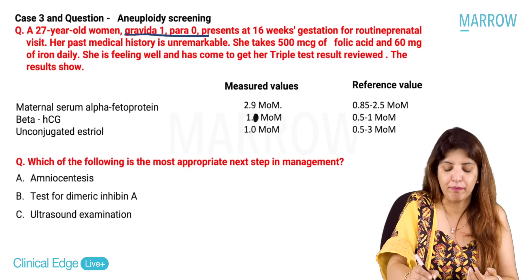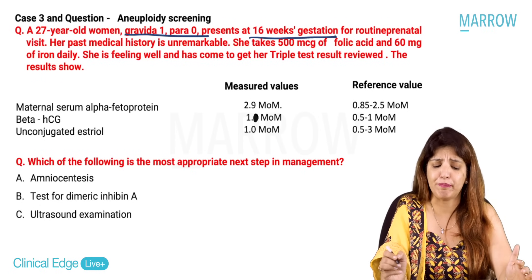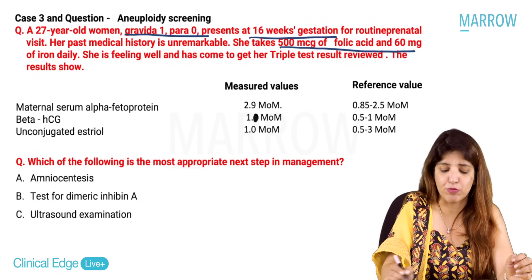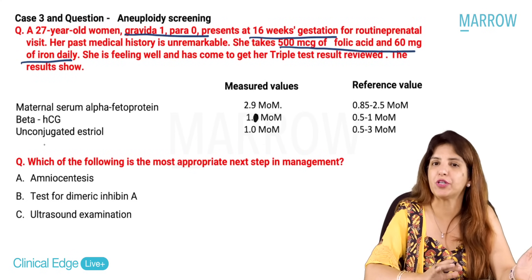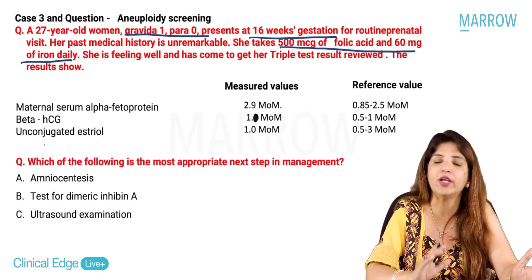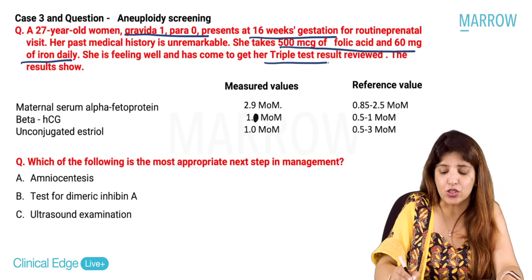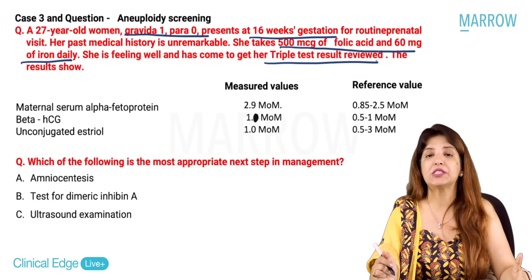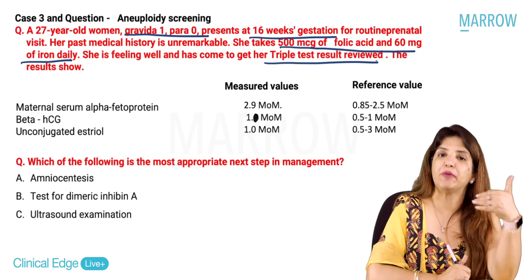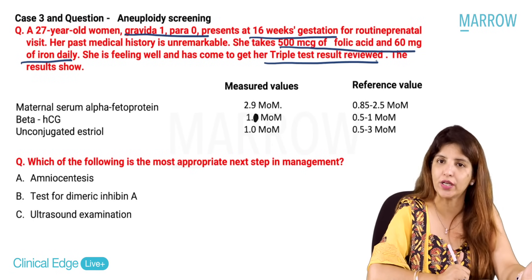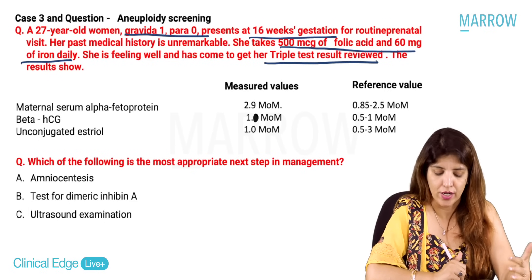Third patient: a G2P1 female at 16 weeks of gestation comes for a routine prenatal visit. Her history is unremarkable. She is on 500 micrograms folic acid and 60 milligrams iron daily as per Anemia Mukt Bharat program. She has come to review her triple test results that were advised at the previous visit, as aneuploidy screening is universal and recommended for all pregnant females.